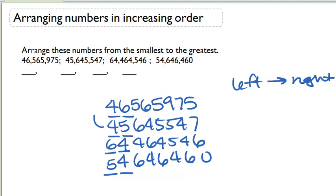Therefore, we know that these two need to trade. Because 45 is less than 46, these two also need to trade because 54 is less than 64. Let's reorder these numbers.